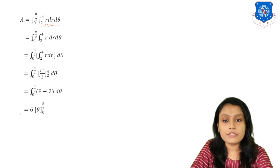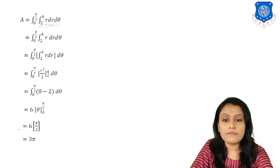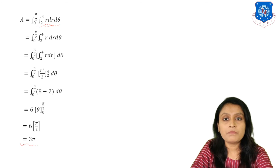Substituting the limits, we get 6 times the integral from 0 to pi/2 of d-theta, which equals 6 times theta evaluated from 0 to pi/2, giving 6 times pi/2. Simplifying, the area equals 3pi.